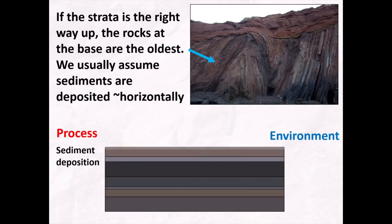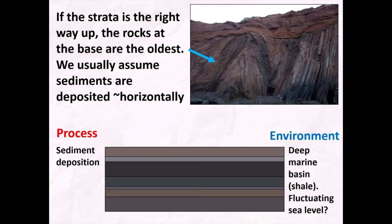Our first step in the geological history was deposition of these darker colored, more finely laminated beds. Based on their color they look like black shales, so I'm going to assume that the initial stage of our geological history involved deposition of this sediment within some sort of low energy, anoxic, potentially deep marine basin to give us most of those shales, but potentially with some fluctuation in sea level to give us the lighter colored bands.